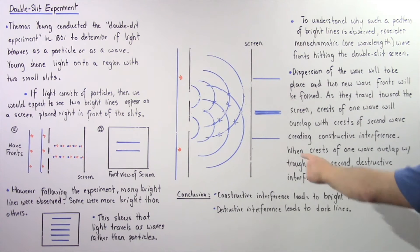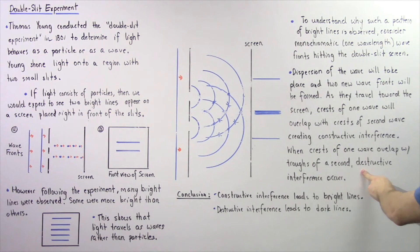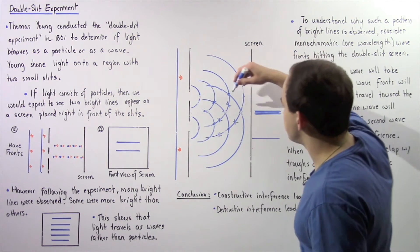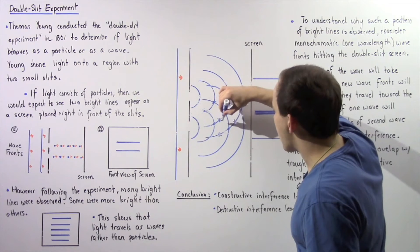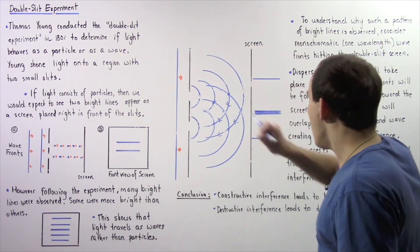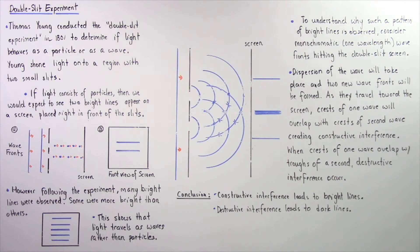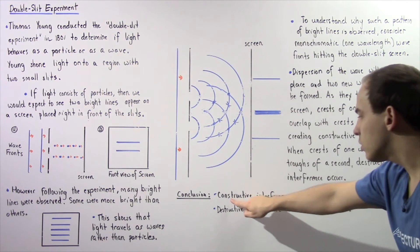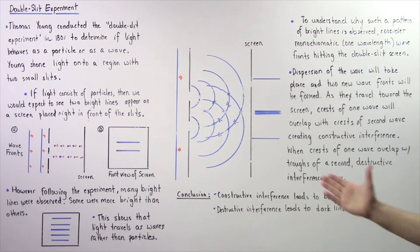So these intersection points are essentially our points of constructive interference, while these axes represent the point of our destructive interference. So when the crests of one wave overlap with the troughs of the second wave, destructive interference takes place. So this is our location represented by x of our destructive interference.